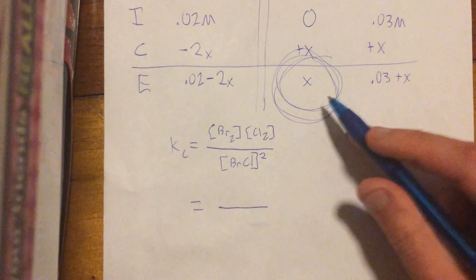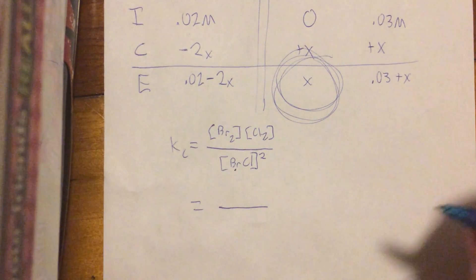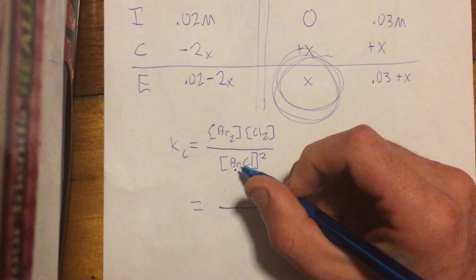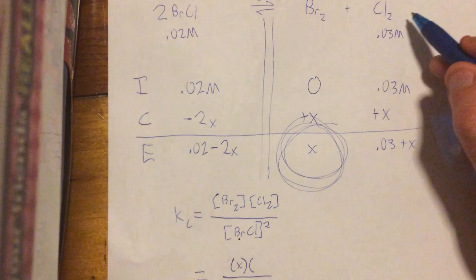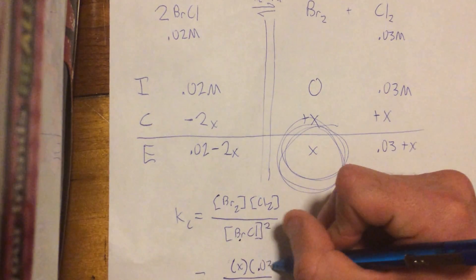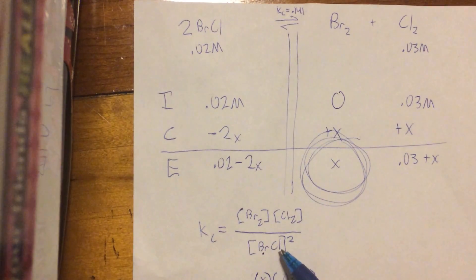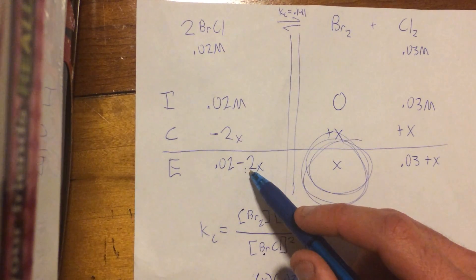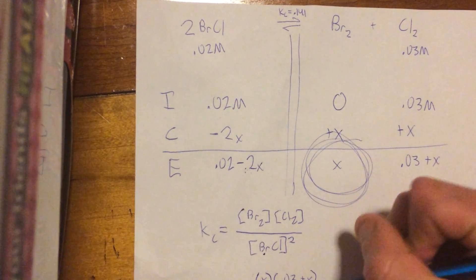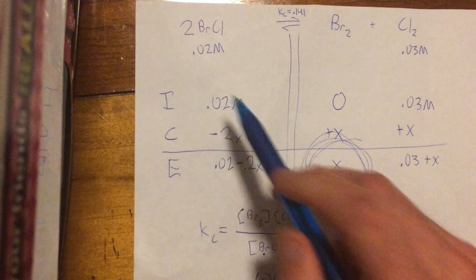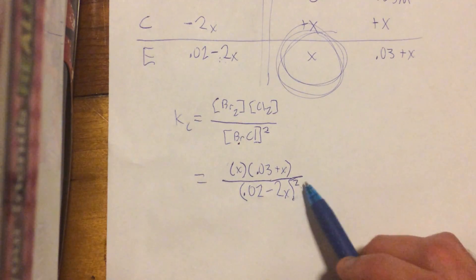Next, we are going to plug in all of these values here, here, and here into these brackets. Easy enough, right? So, let's see here, Br2 is just x, and then Cl2 is 0.03 plus x, and then the bottom we have BrCl2, so BrCl2, right here, 0.02 minus 2x, 0.02 minus 2x. And don't forget that that one is squared, because the coefficient, that was here and here, so it is squared.